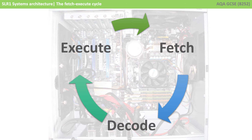A computer carries out its function by fetching instructions, decoding them, and then executing them in a continuous and repetitive cycle, billions of times a second. Let's look at each of these stages in a little more detail.